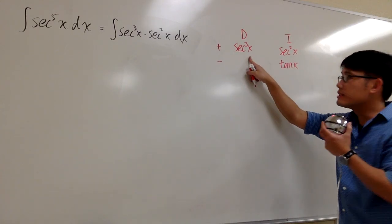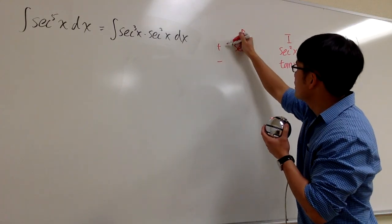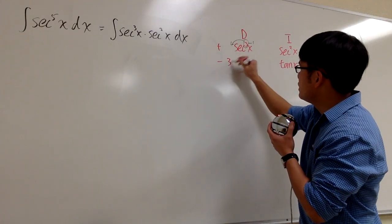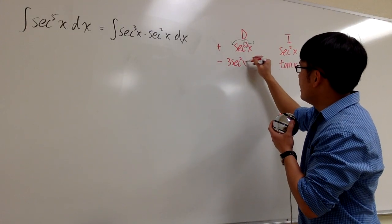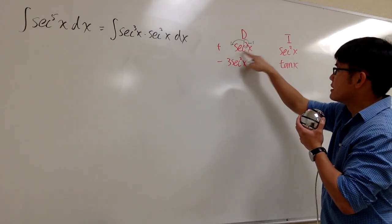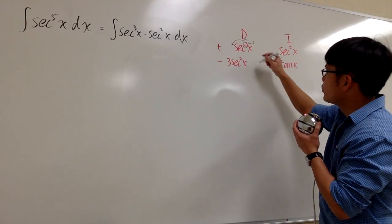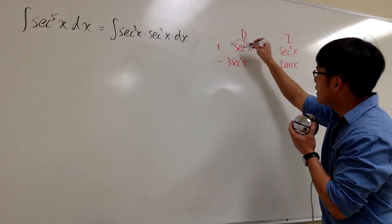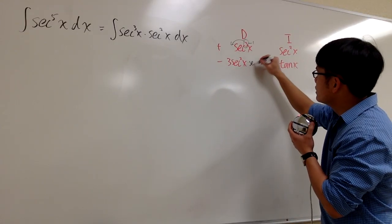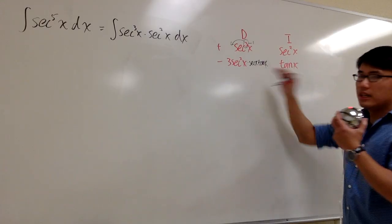To differentiate secant to the third power, we bring the 3 to the front and subtract 1, giving 3 secant squared x. But the inside is secant x, so by the chain rule, we multiply by the derivative of secant x, which is secant x tangent x.